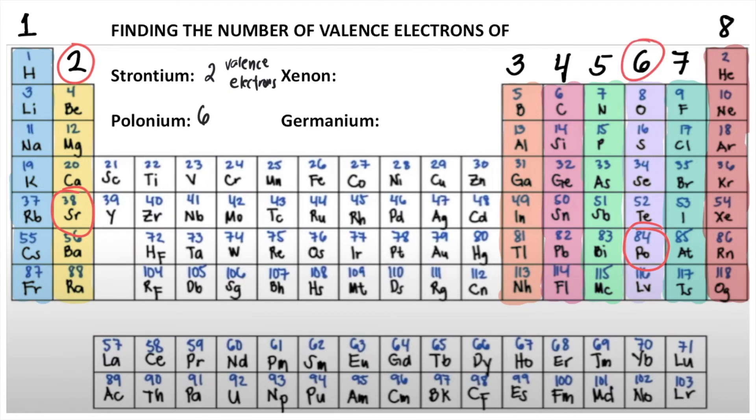How about xenon? Xenon is here under column 8. So xenon has 8 valence electrons.